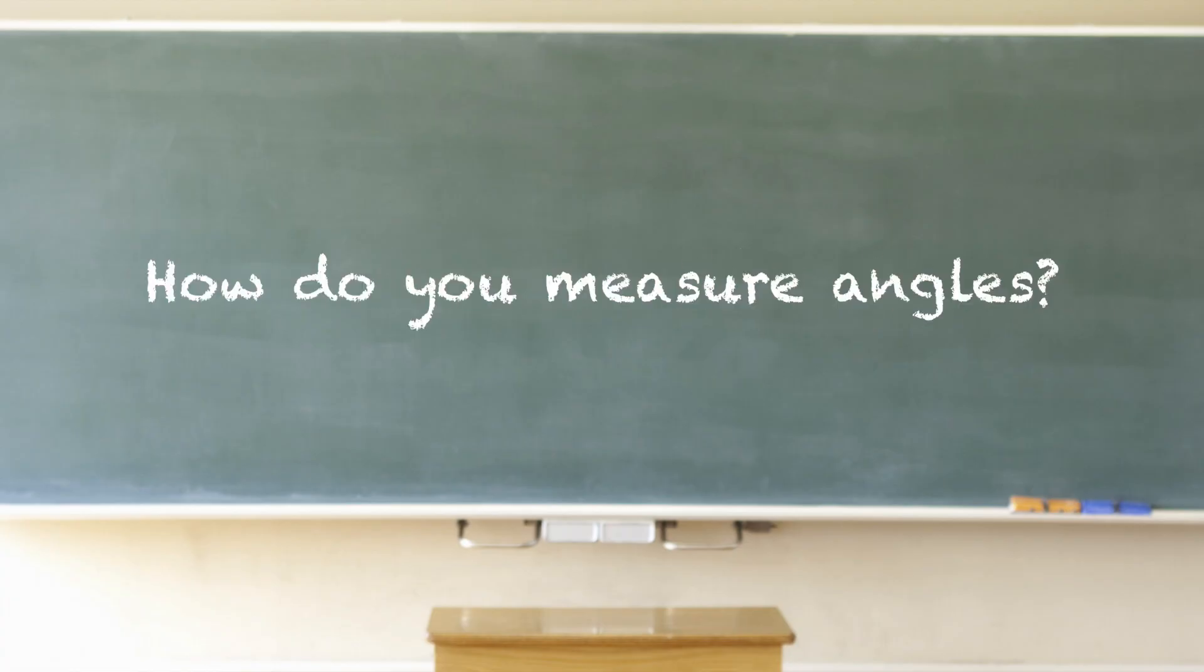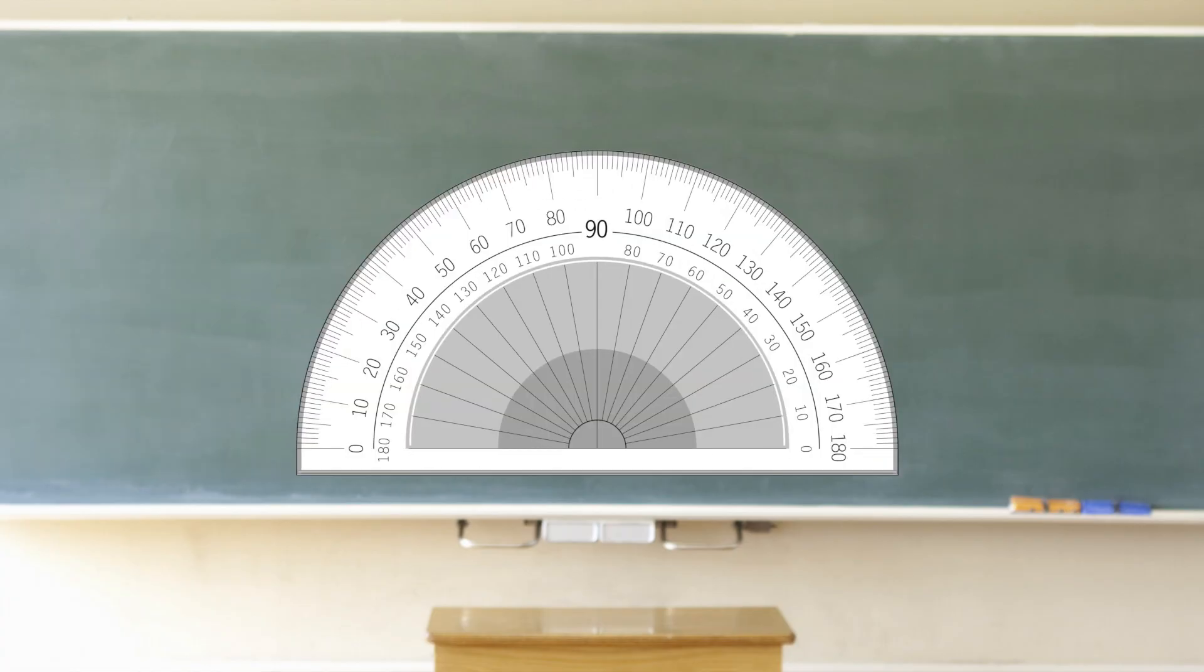Measuring angles. How do you measure angles? With a protractor. A special tool is used to measure angles in degrees called a protractor. Protractors are easy to use as a ruler. Simply read the measurements shown to determine the degrees.